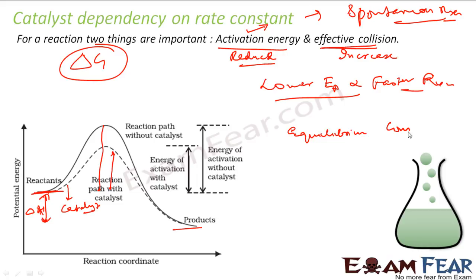Catalysts also don't change the equilibrium constant of the reaction, because they catalyze both the forward and backward directions equally. The threshold energy decreases for both forward and backward directions, so activation energy decreases in both directions. It simply helps the reaction attain equilibrium faster. It won't change delta H, delta G, or the equilibrium constant — the only effect is increasing the rate of reaction in both forward and backward directions.